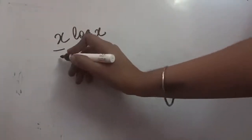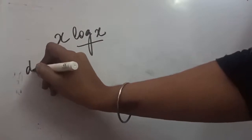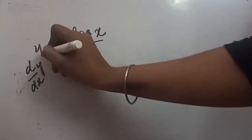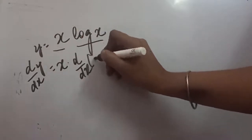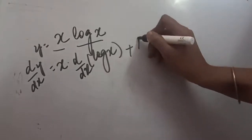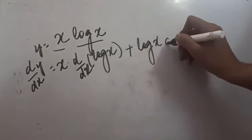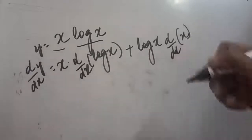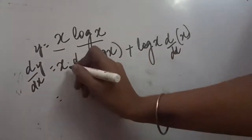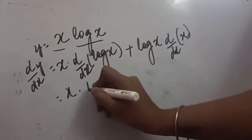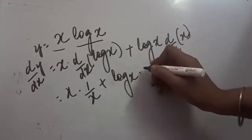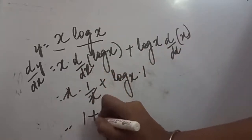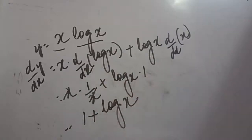For the next question, we have two functions: u = x and v = log x. To take d/dx of y, applying the product rule: it will be x times d/dx(log x), plus log x times d/dx(x). Here x remains as-is and the derivative of log x is 1/x, plus log x and derivative of x is 1. So the answer simplifies to 1 + log x.